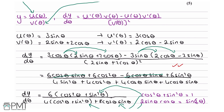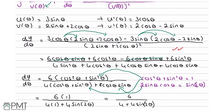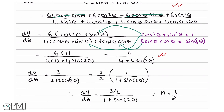Your third and fourth marks come from correctly using cosine squared theta plus sine squared theta equals 1, and 2 sine theta cosine theta equals sine 2θ. Getting to something like 6 over (4 plus 4 sine 2θ) is enough evidence of this step. If you use both identities correctly you get two marks; if you use only one correctly, you get one mark.